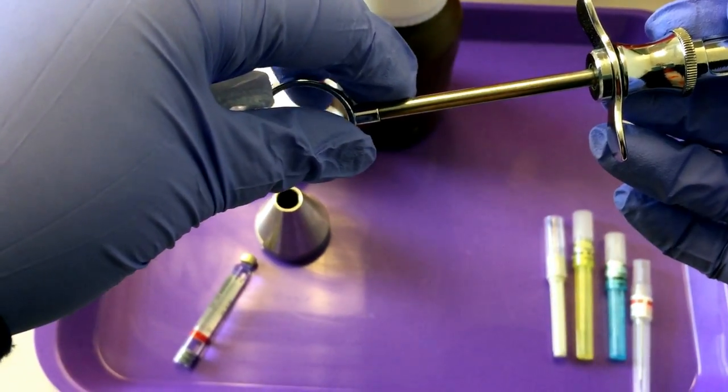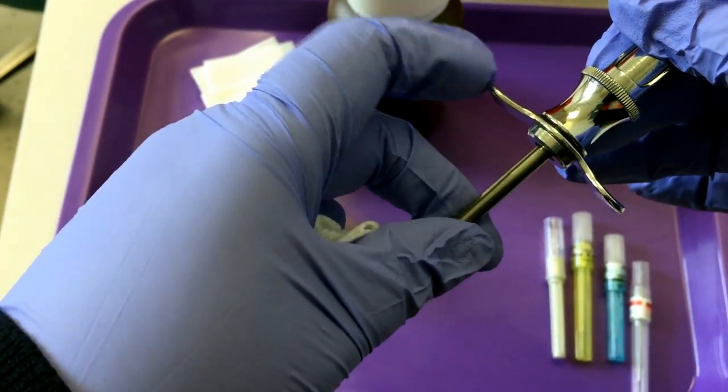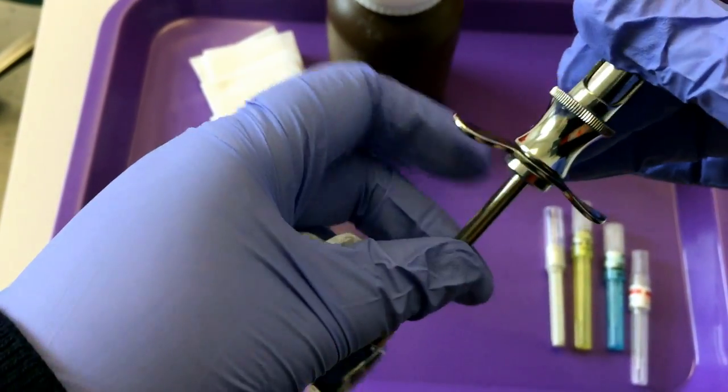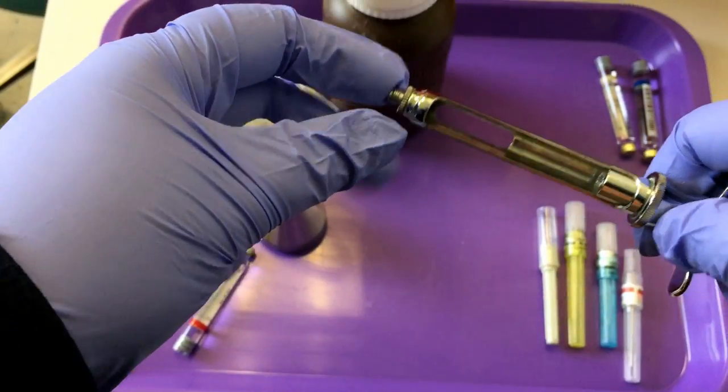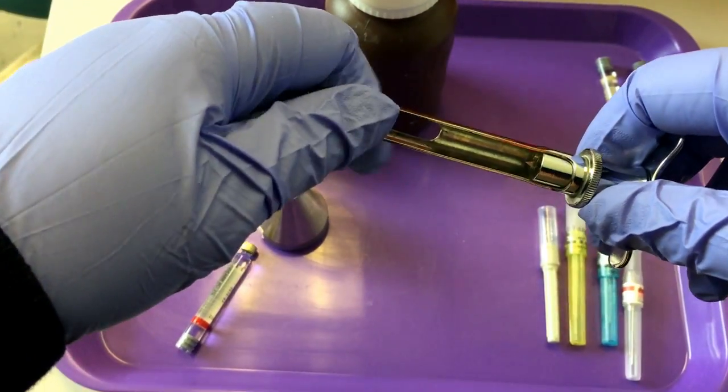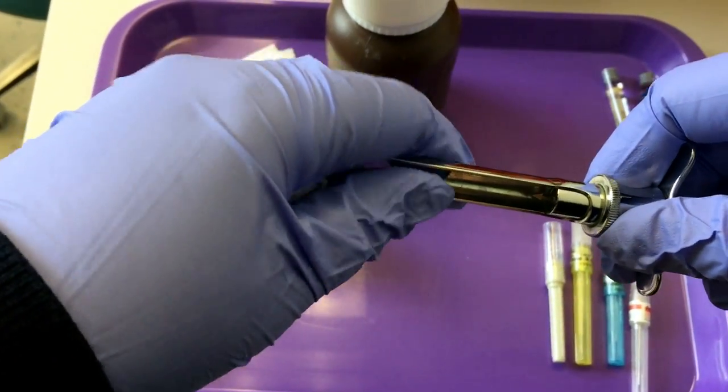You have a piston. You have a finger rest, which is movable. You have your barrel where the carpule goes. Make sure your barrel is tight.